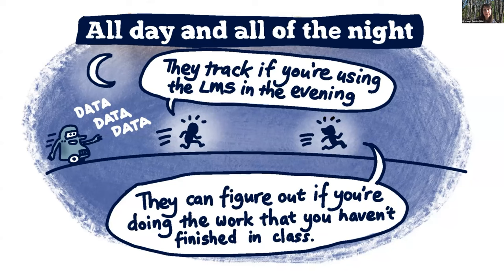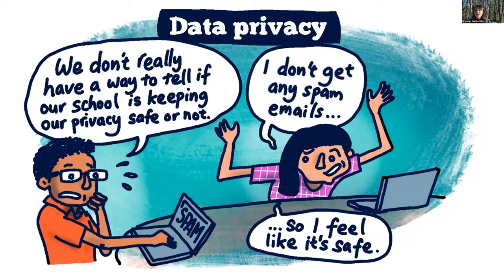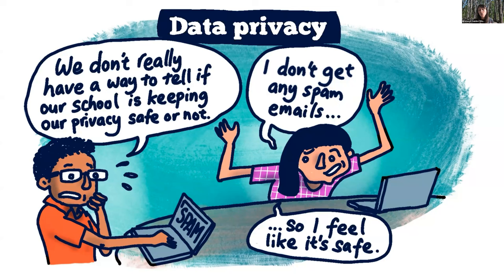Students had diverse opinions on data privacy in schools. One group was distrustful of personal data platforms like social media or Google, but trusted that school platforms would keep their data private. A second group, while not trusting what personal platforms did with their data, used strategies like fake names or false birth dates to keep their data safe. But when it came to school data, students weren't afforded this type of agency — they expressed being users of digital media who knew little about who or what was interested in their data and how it was being used.